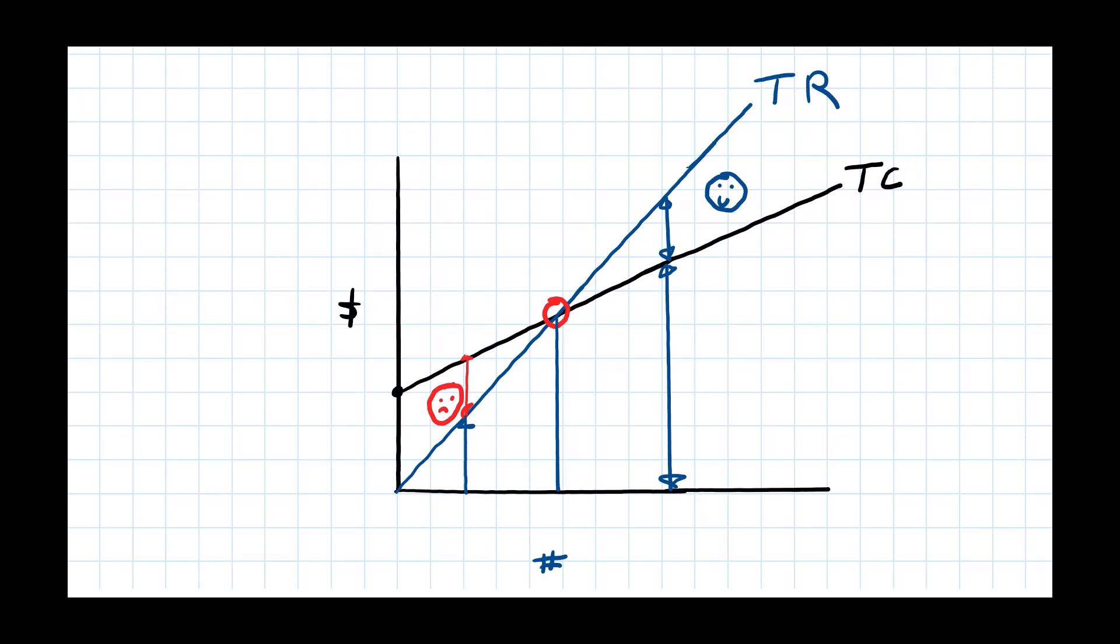Let's imagine that the break-even point was 100,000 units. So now we know for planning purposes we would need to achieve 100,000 units to break even to achieve a profit of zero essentially. Anything above 100,000, we are now earning a profit.